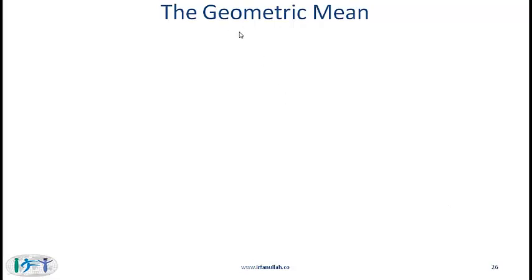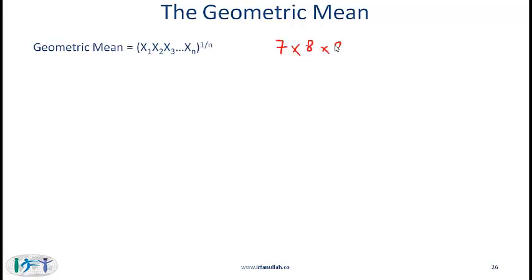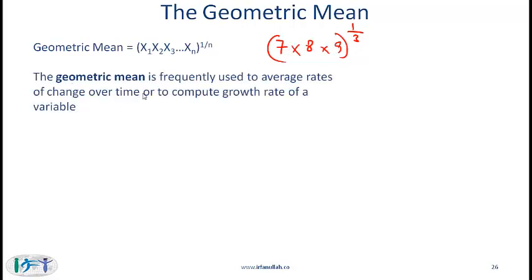Let's now talk about the geometric mean. Mathematically, the geometric mean of N numbers is the product of the N numbers raised to the power of 1 over N. For example, for three numbers 7, 8, and 9, the geometric mean would be (7 × 8 × 9) raised to the power of 1/3. The geometric mean is frequently used to average rates of change over time or to compute the growth rate of a variable — for instance, to compute your average interest rate over a given period, which is also what we did when computing the time-weighted rate of return in the previous reading.